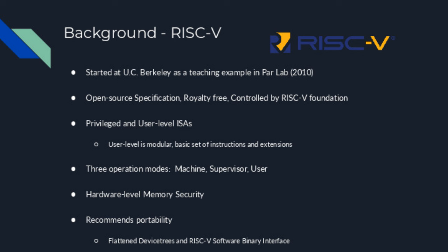RISC-V has privileged and user-level ISAs. The user-level ISA is very modular — there's a core ISA and different sets of ISAs you can add, plus extensions. It's a pretty big collection of variety. One interesting thing is the three different levels: machine, supervisor, and user mode. The machine level can be your hypervisor, supervisor can be your OS, and then of course the standard user level. Most OSes typically run in the supervisor/user area.